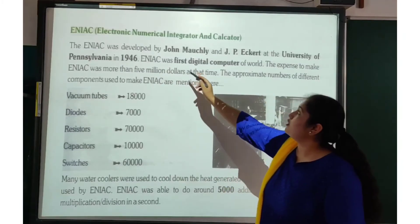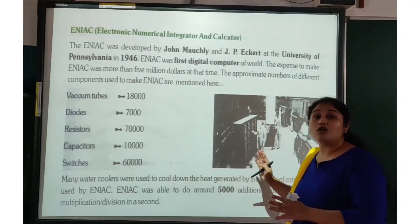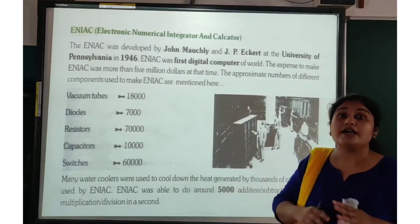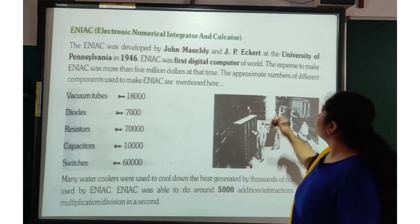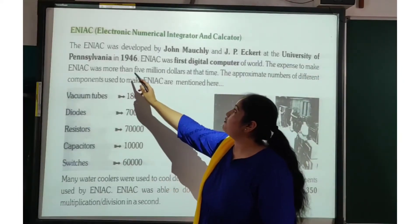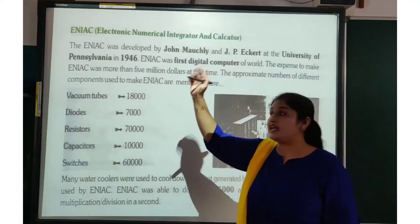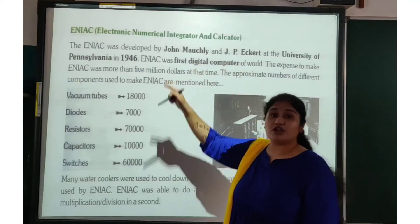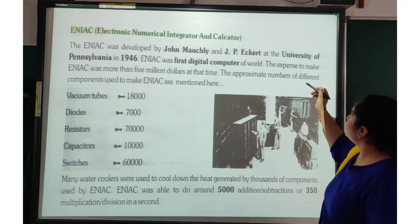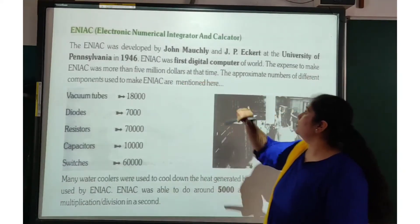ENIAC was the first digital computer in the world. The expense to make ENIAC was more than 5 million dollars at that time. During 1946, to develop this first digital computer, the cost was more than 5 million dollars.